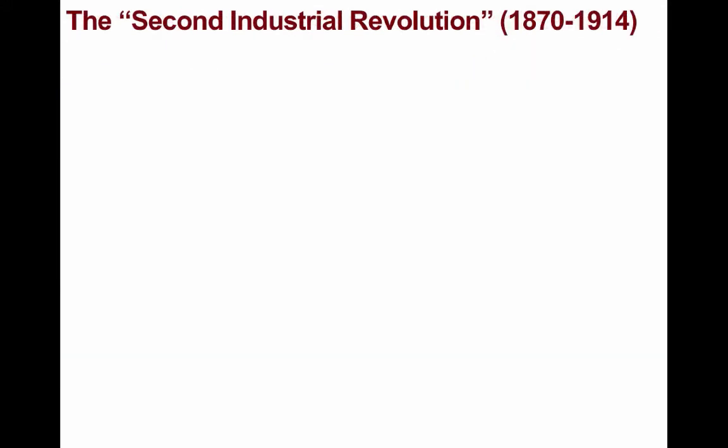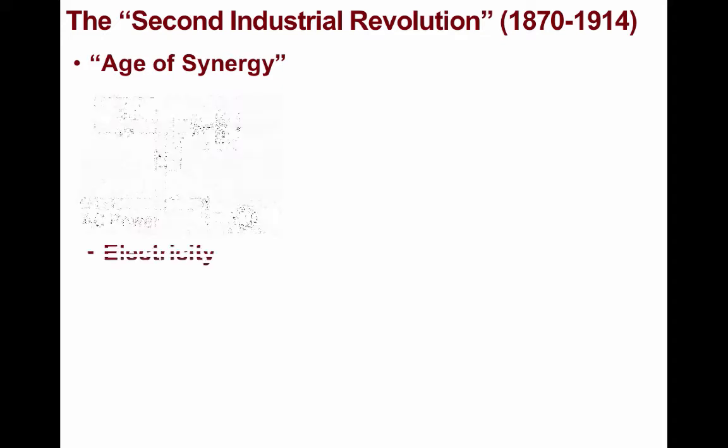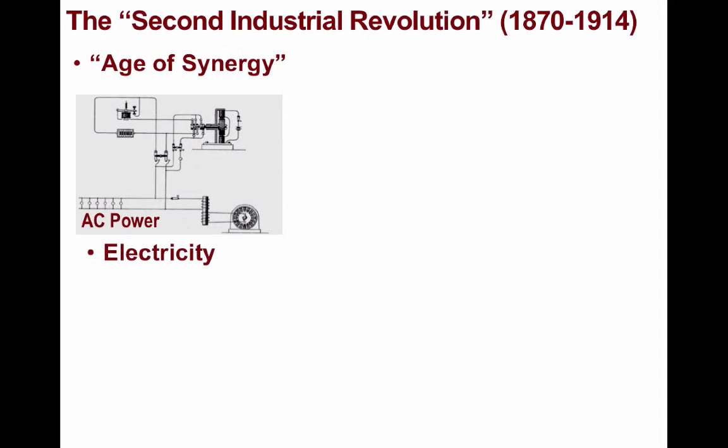This marked the start of the Second Industrial Revolution, sometimes called the Technological Revolution or the Age of Synergy, that spanned from 1870 to the start of World War I in 1914. Synergy refers to the cumulative benefits of working together — essentially the creation of something greater than the sum of its parts. That synergy came about as a result of a multitude of technologies, such as the proliferation of electric power, which became more ubiquitous with the expansion of alternating current — what powers the vast majority of global electric grids, since its energy dissipates less over distance compared with direct current.